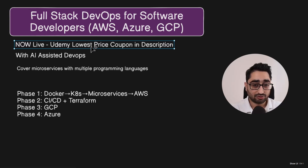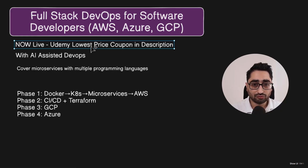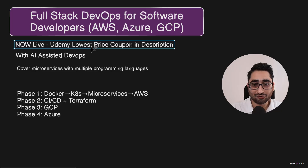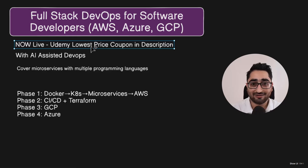Companies are looking for engineers who know the end-to-end lifecycle of software development. You should know how to build software, write code, and also how to deploy. You should also have knowledge of DevOps tools like Docker and Kubernetes, and you should know CI/CD. It's no longer optional — developers today should have this knowledge.